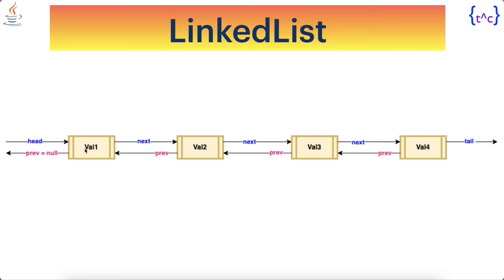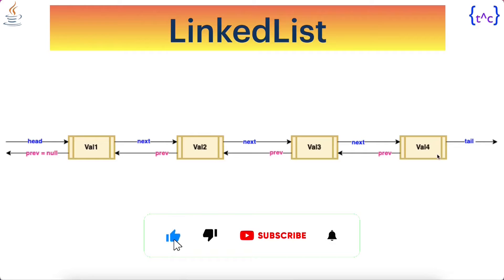The first node holding val1, since it is the first node, does not have any previous node — so prev will be null for this, and head points to it. The last node holding val4 has no node after it, so it is called the tail node. There is also a concept of circular doubly linked list, wherein this node holds the address of the head node and the head node holds the address of the last node. That is how the linked list is implemented in Java.